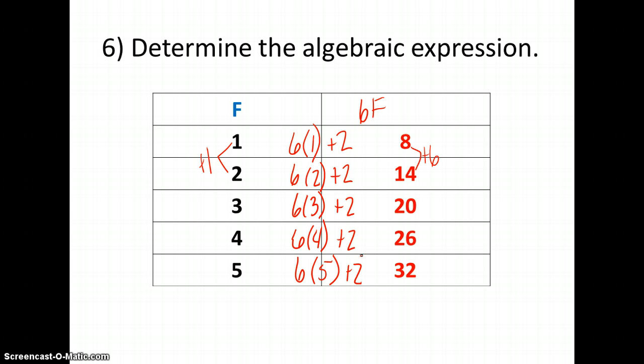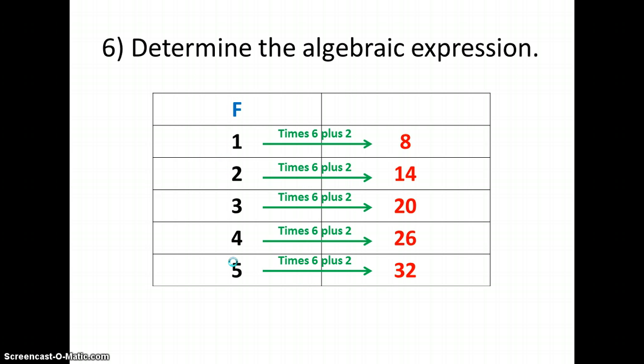So in each of these, I am taking my variable F, and each number I substitute it for, I'm multiplying it by 6, then adding 2 to get the right column. So my algebraic expression is 6F plus 2.